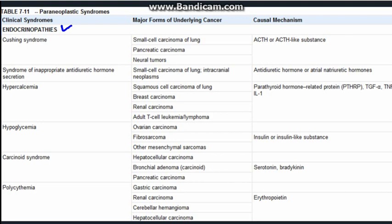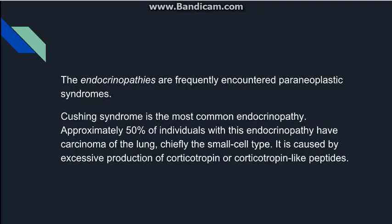Paraneoplastic syndromes come in a variety of types. Firstly, there are endocrinopathies; then there are some related to the nerves and muscles, and some related to the skin. Going to the endocrinopathies first — the most important and most common paraneoplastic syndromes are the endocrinopathies, and out of them, Cushing syndrome is the most common endocrinopathy presenting as a paraneoplastic syndrome.